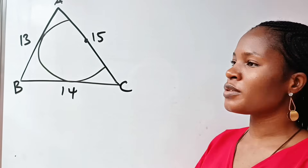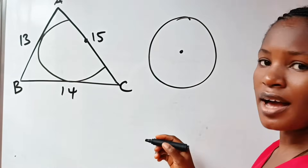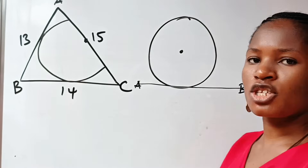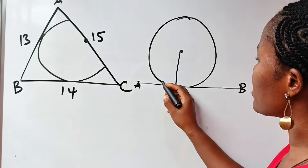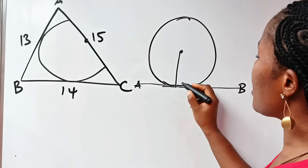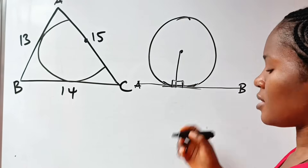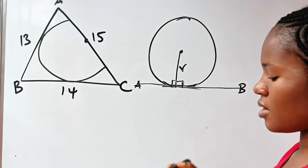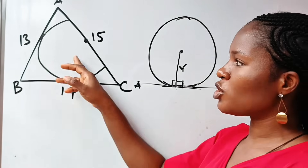First, I want us to remember this theorem: in a circle of center O, if you draw a straight line from the center of the circle to touch a tangent at its point of contact with the circle, a right angle is formed between the line and the tangent. Any line drawn from the center to touch the circumference is a radius, so between the radius and the tangent, 90 degrees is formed.